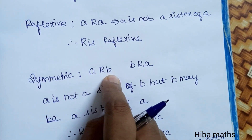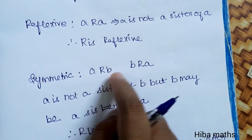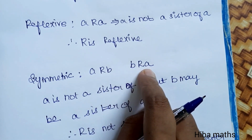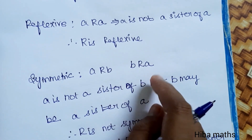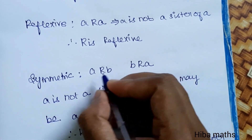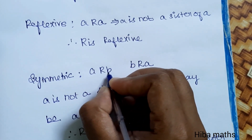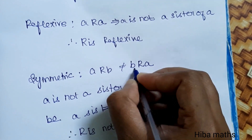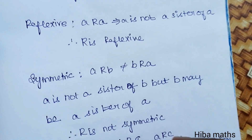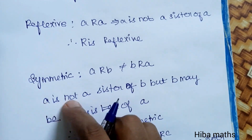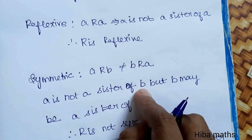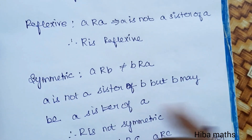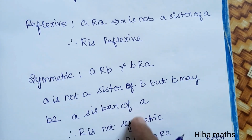Symmetric: A is not a sister of B. But B may be a sister of A. So if A relates B, B may not relate A, meaning the relation is not necessarily Symmetric.